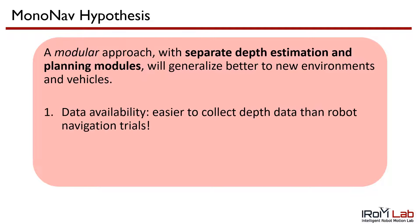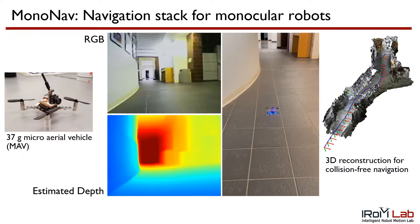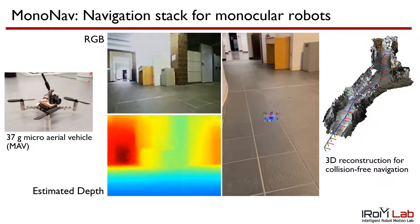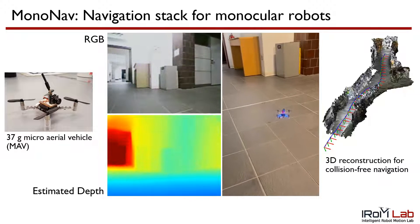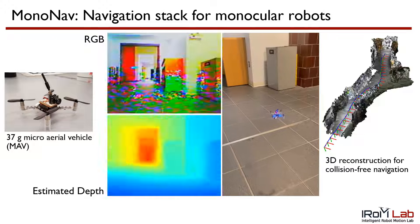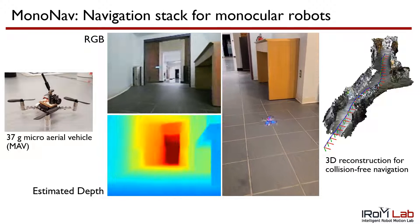This is because: one, it is easier to collect depth data than robot navigation trials; and two, separate modules are more interpretable and thus easier to debug, tune and adapt. We present MonoNav, a monocular navigation stack that leverages state-of-the-art metric depth estimation networks, off-the-shelf fusion algorithms, and conventional planning techniques to enable tiny monocular robots to navigate fast in constrained indoor environments.